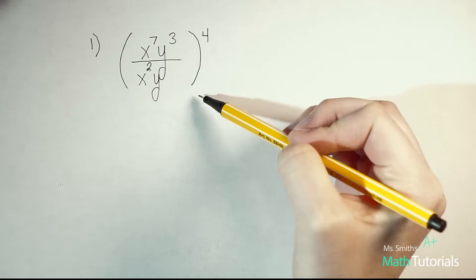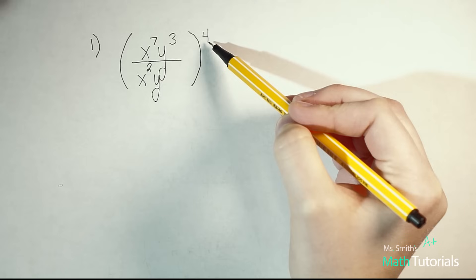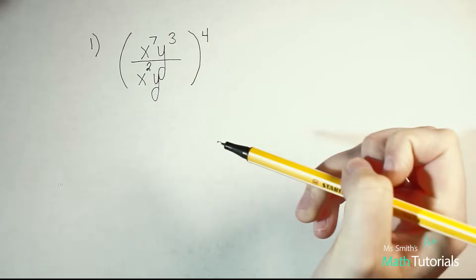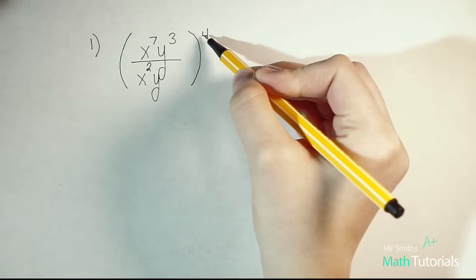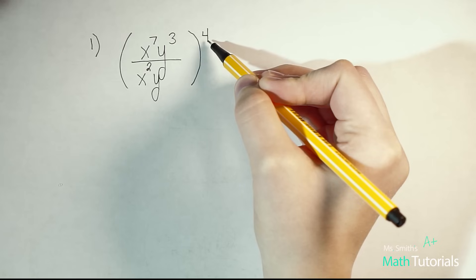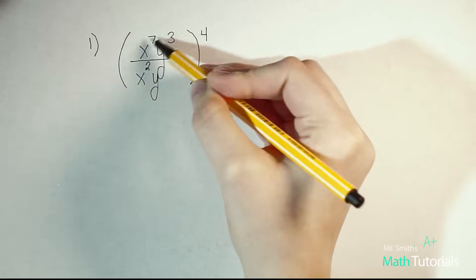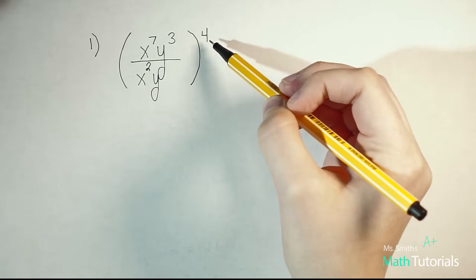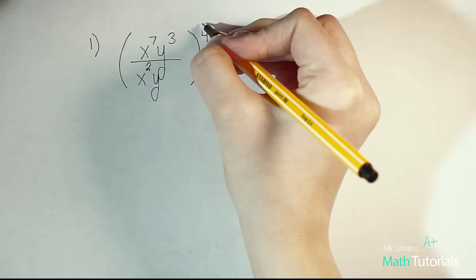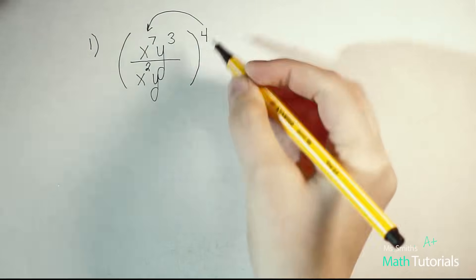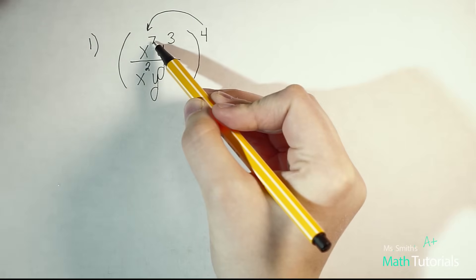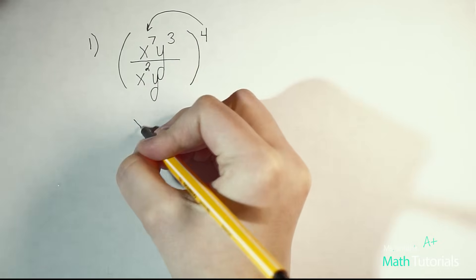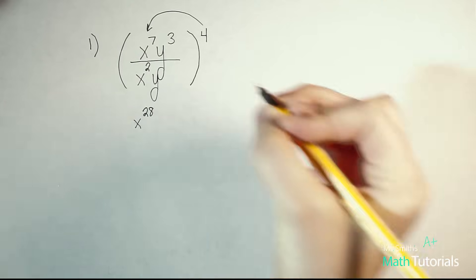In this problem, I notice I have a set of parentheses with an exponent of 4 outside of it. So that means everything within these parentheses is brought to the power of 4. I want to eliminate this exponent on the outside first. So we're going to distribute this 4 throughout the whole problem. I've got this x to the 7th brought to the power of 4. Power to power means I multiply. So 7 times 4 is x to the 28th.